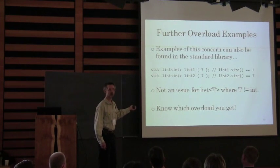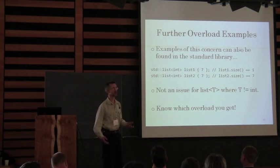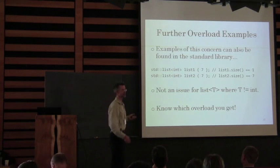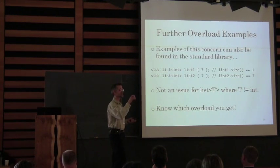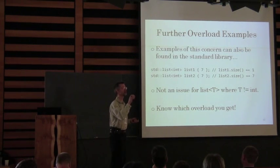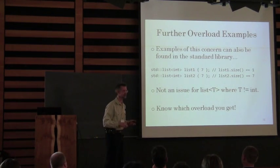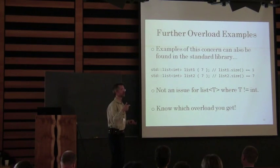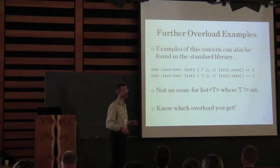What I just described also shows up in the standard library. If you brace-initialize a vector of integers with a single integer, what you get is a vector containing that single integer — not a vector pre-initialized to that size. I'm sure the standard committee had reasons for choosing to do that, possibly for uniformity.